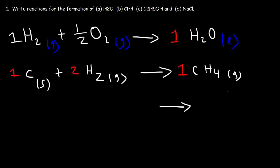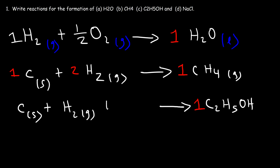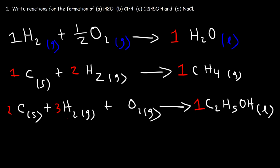Now what about part C: write the formation reaction for ethanol. Ethanol consists of carbon, hydrogen gas, and we also need oxygen gas to make it. Ethanol in its natural state is a liquid at room temperature. So we need to balance it. We have 2 carbon atoms on the right side, and a total of 6 hydrogen atoms on the right, so we need to put a 3 in front of H2. And we only have 1 oxygen atom on the right side, so we need a 1/2 in front of O2. And now it's balanced.